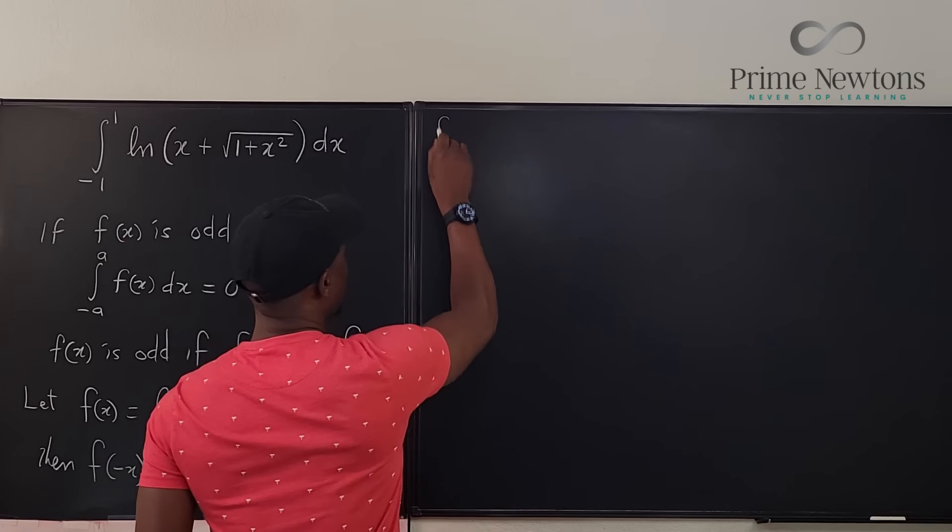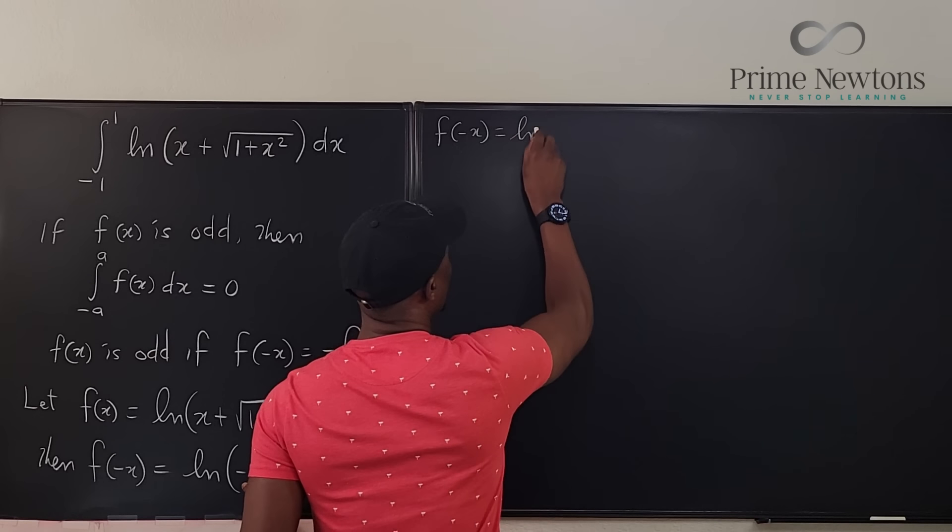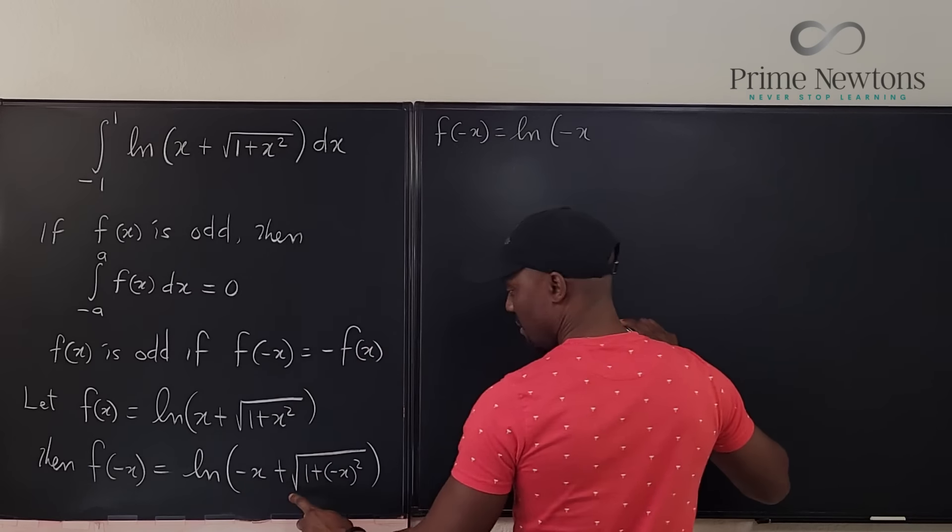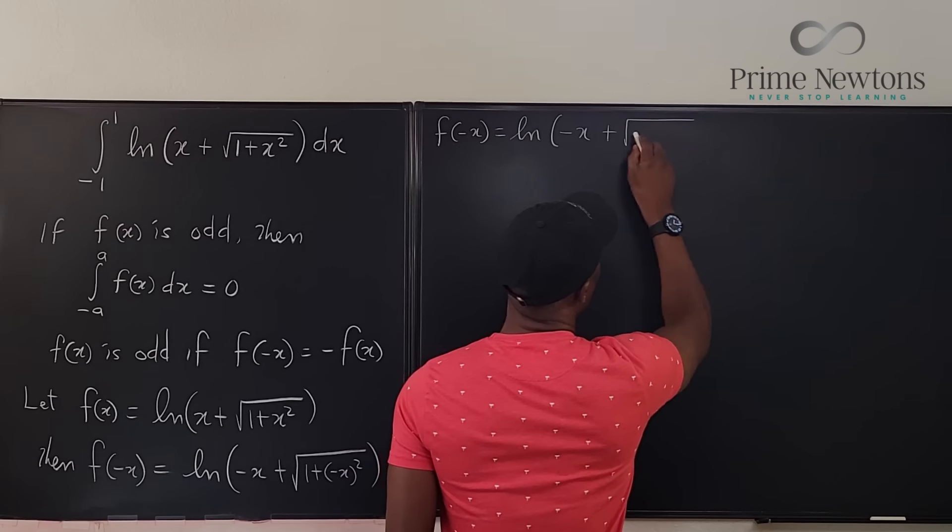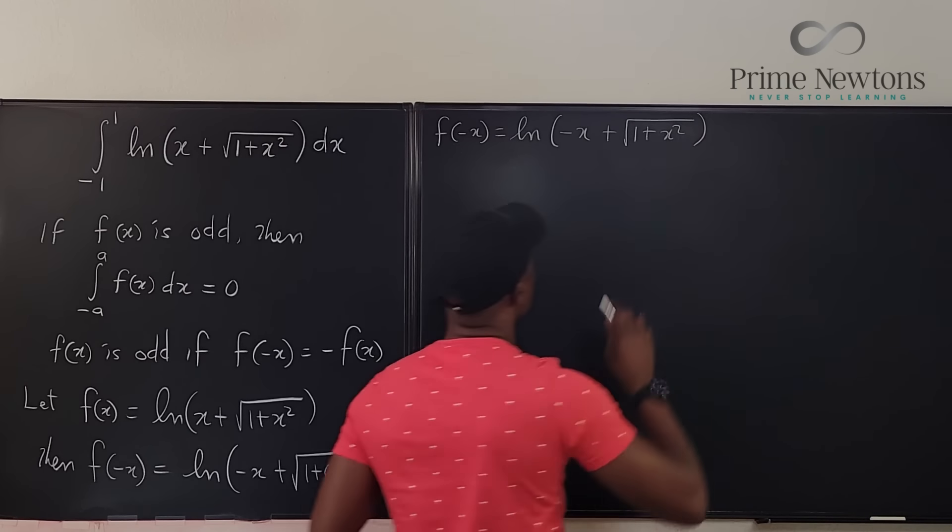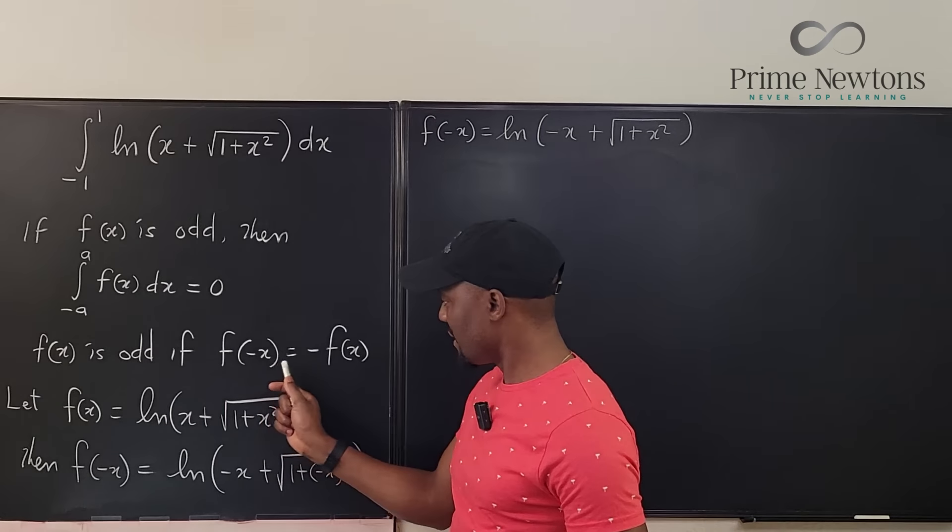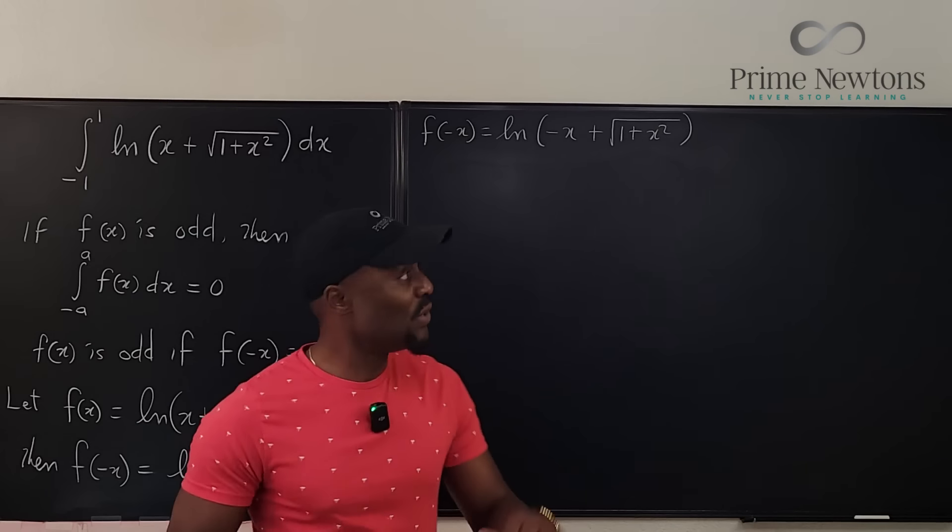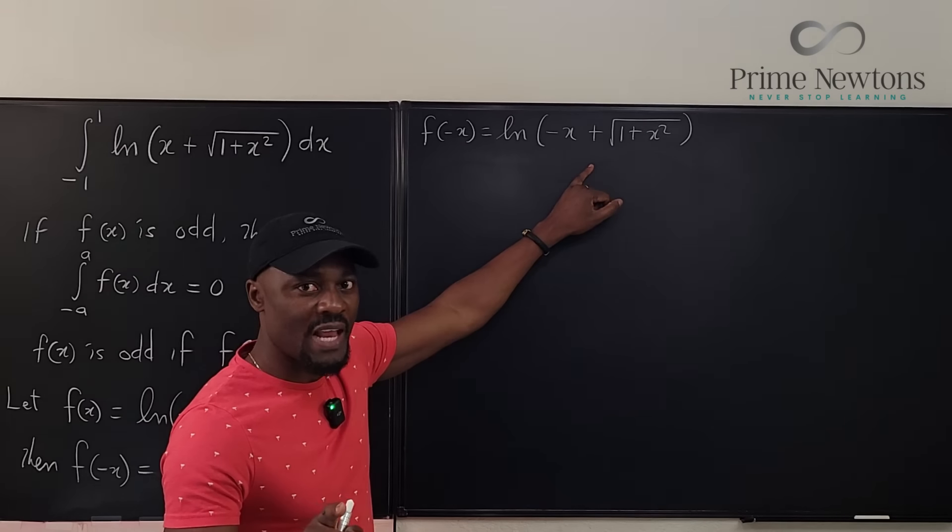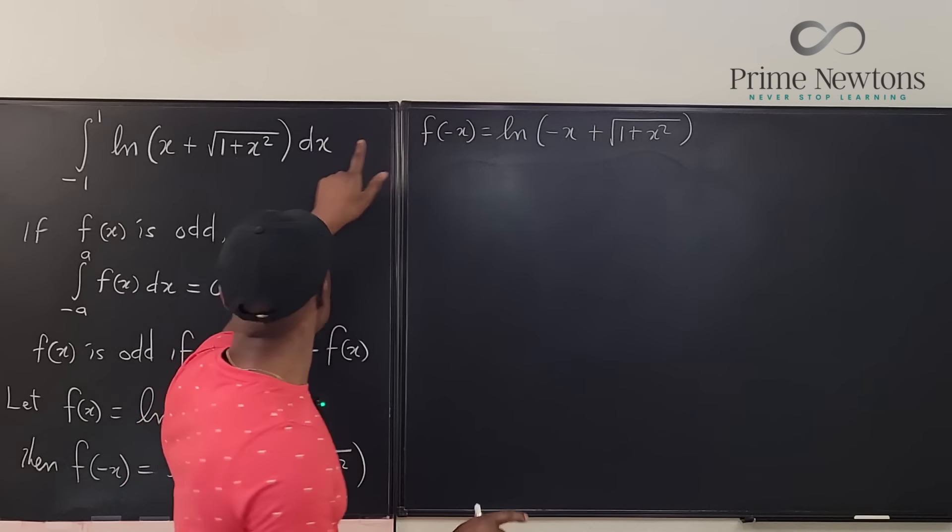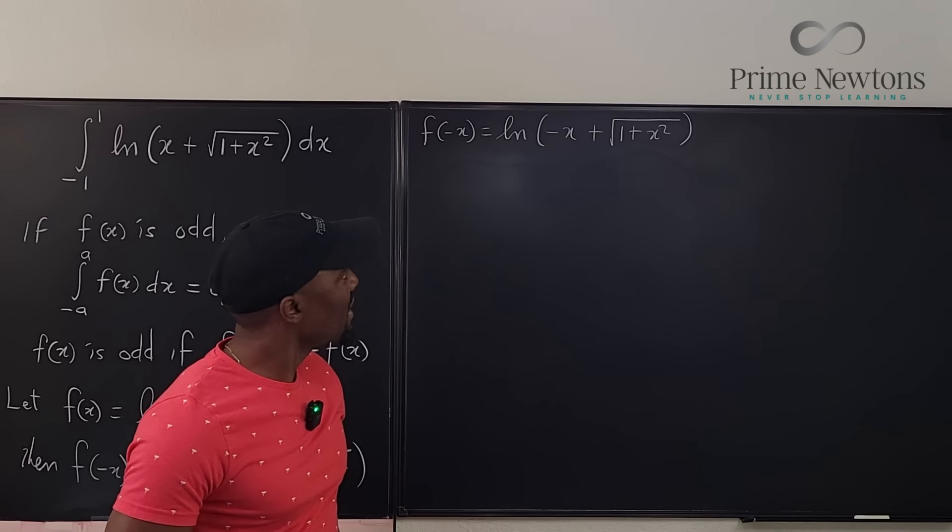So that tells us that f of negative x is equal to the natural log of negative x plus, now when we square this is just positive, the square root of 1 plus x squared. So remember that our mission is to show that f of negative x equals negative f of x. If you look at this closely, this is f of negative x. We want to show that it is equal to if you just have a minus sign behind this function.